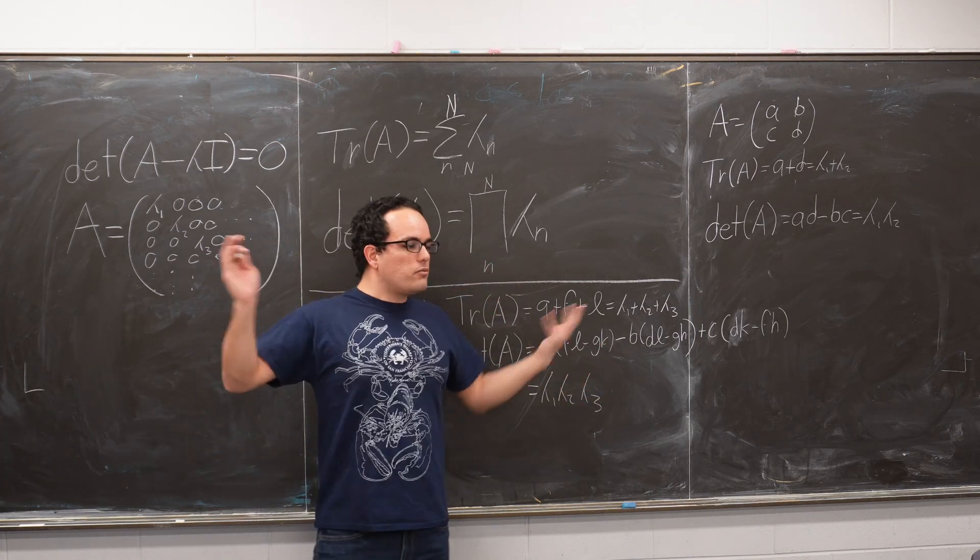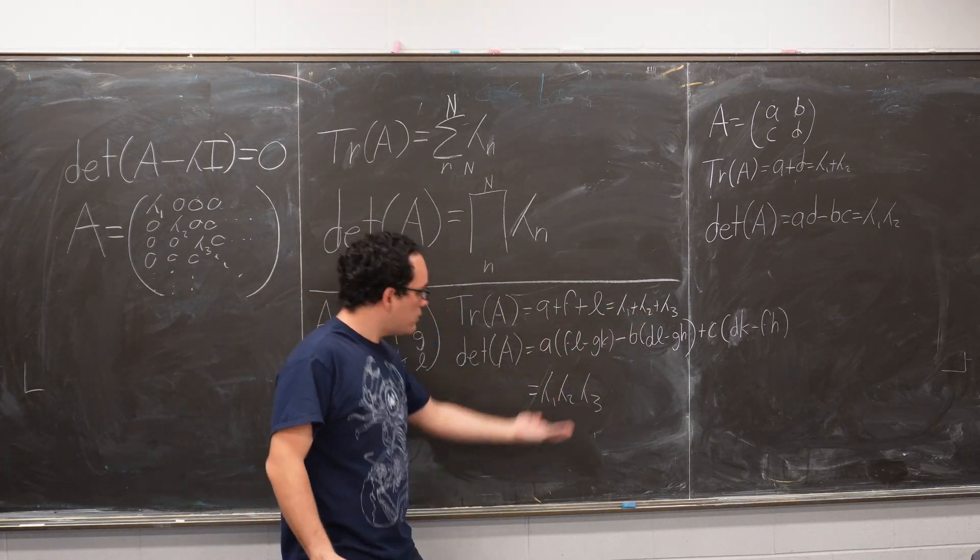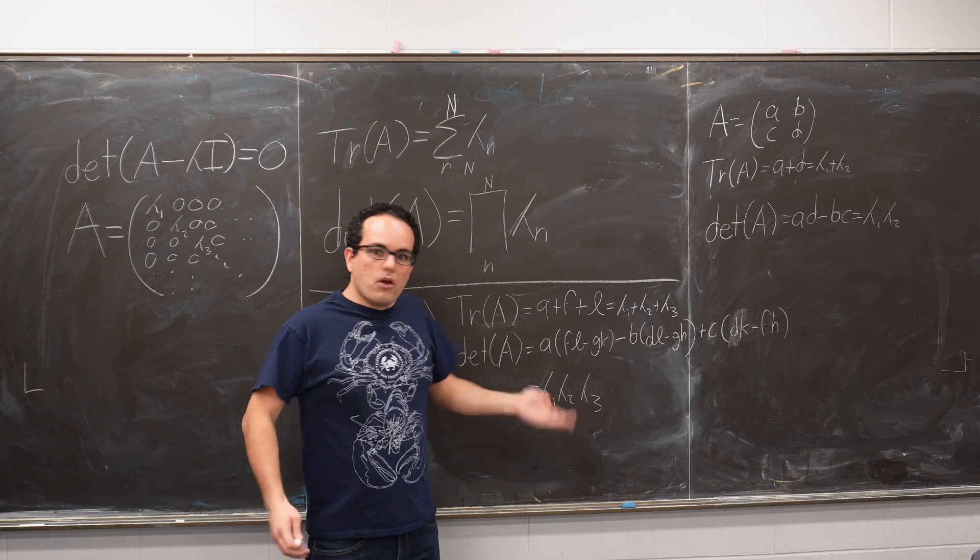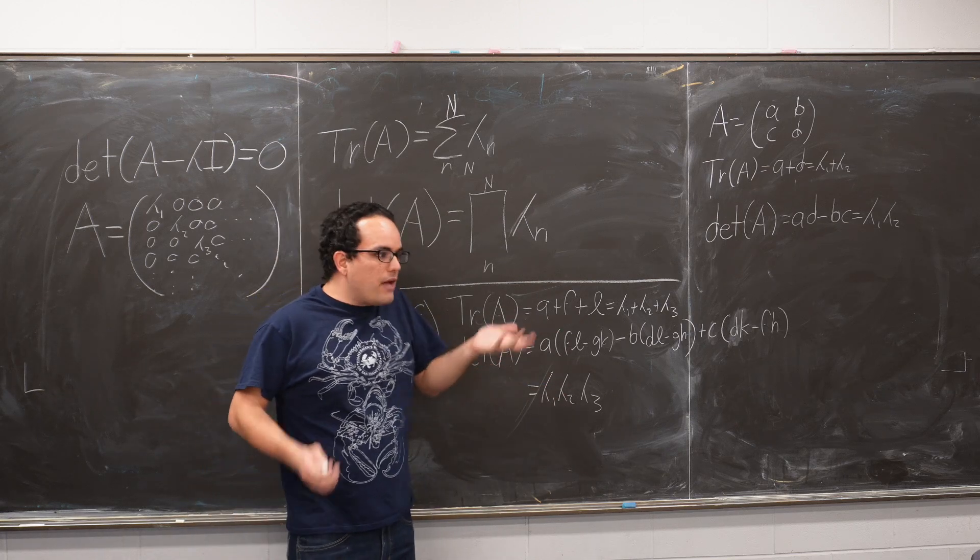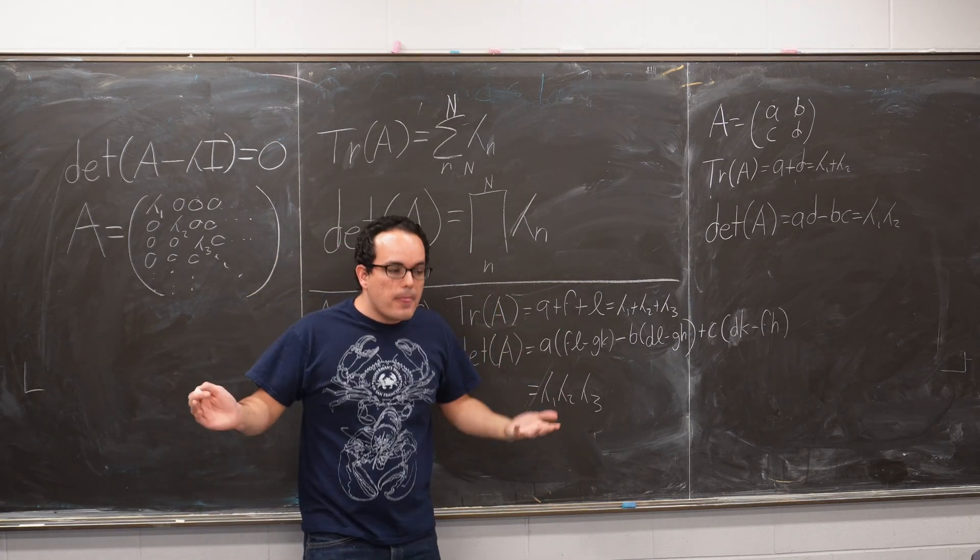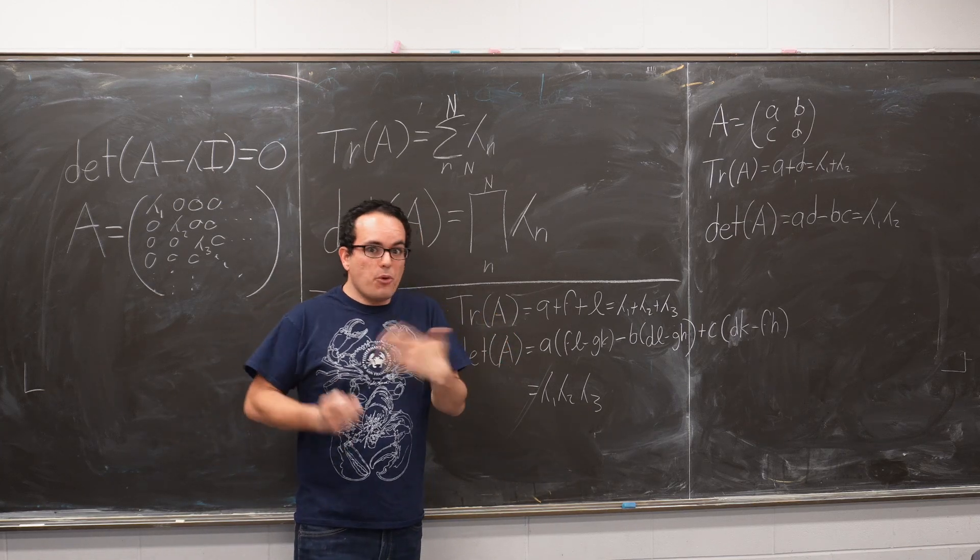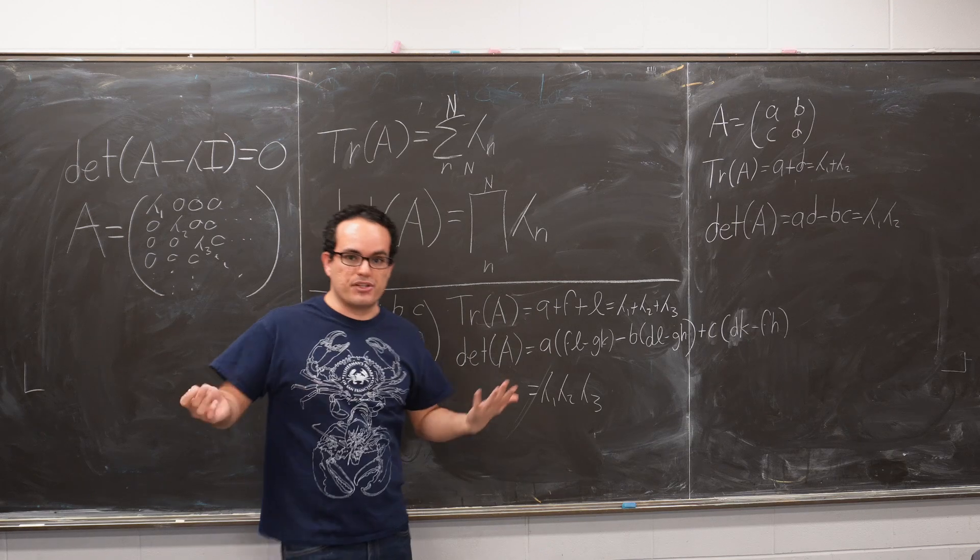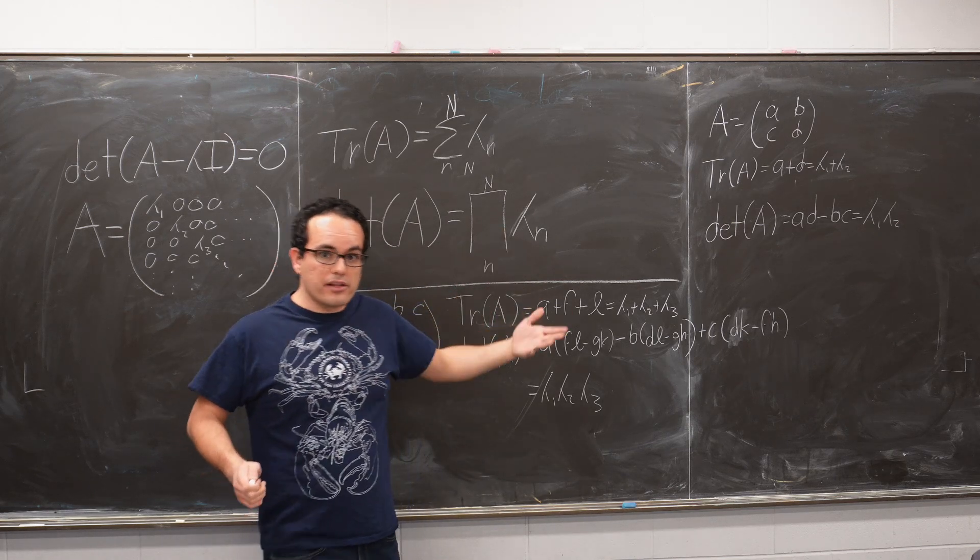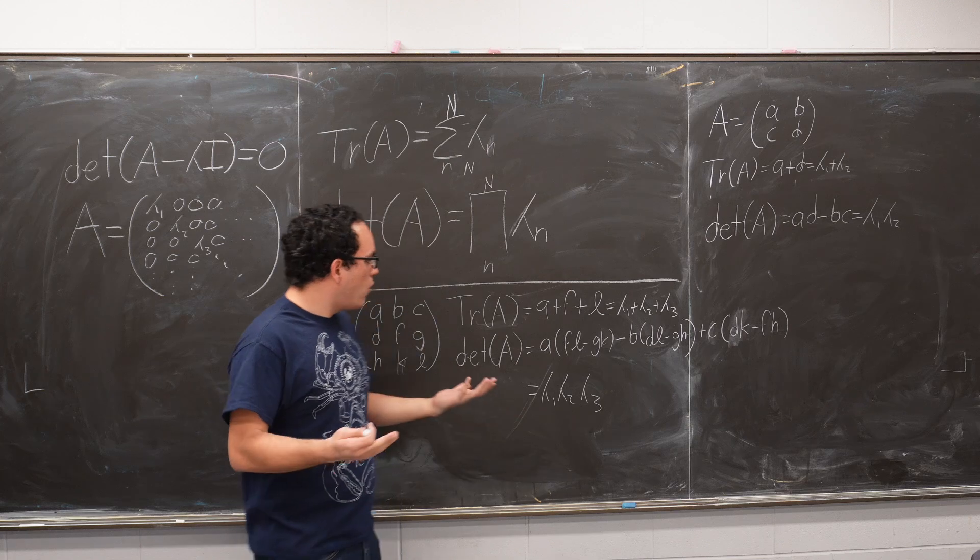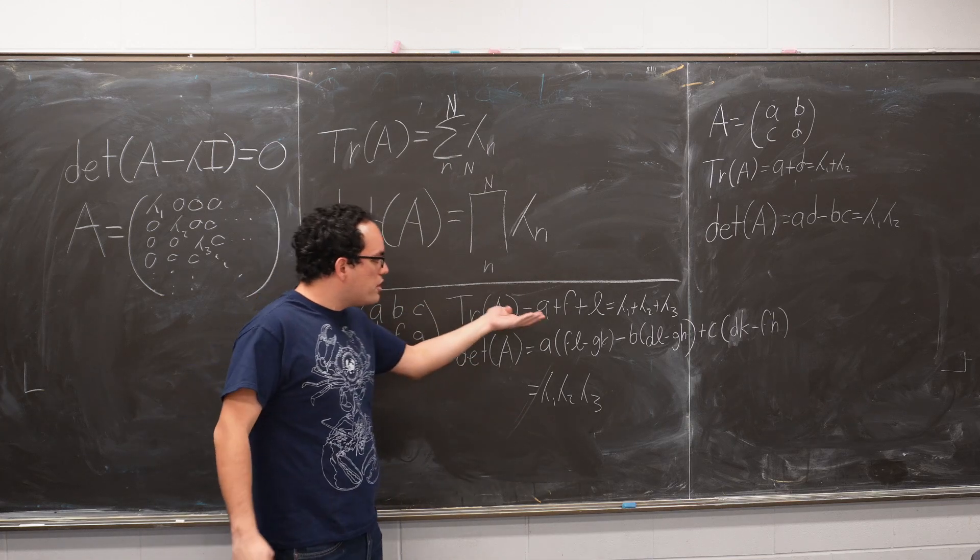And you might be thinking, well, look, we have three variables and we have two equations. We cannot solve this. We have one extra degree of freedom. And sure, that's true. But it turns out that, very often, no, you don't. Because many matrices, for example, the momentum matrices that I mentioned earlier, are traceless. So their trace is always equal to zero.